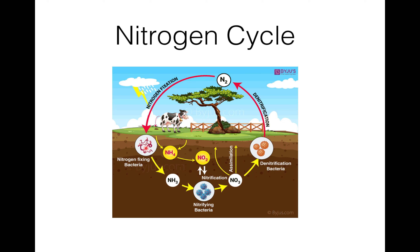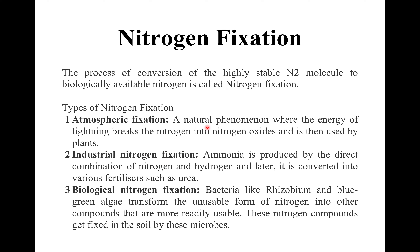Nitrogen fixation can occur in several ways. Atmospheric fixation is a natural phenomenon where the energy of lightning breaks nitrogen into nitrogen oxides, which are then used by plants. Industrial nitrogen fixation involves manufacturing ammonia under high temperature and pressure conditions — a man-made process that creates ammonia and nitrogen-rich fertilizers.